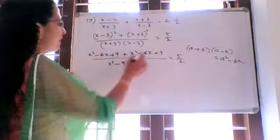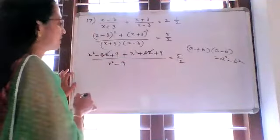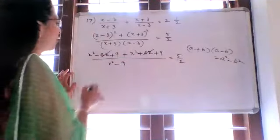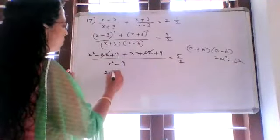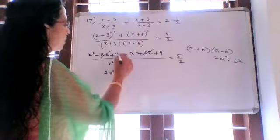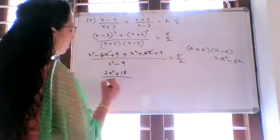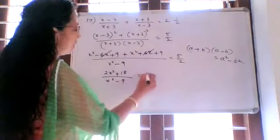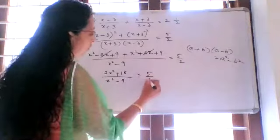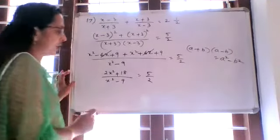The 6x terms cancel: minus 6x and plus 6x cancel. So the numerator becomes 2x squared plus 18, divided by x squared minus 9, is equal to 5 by 2.